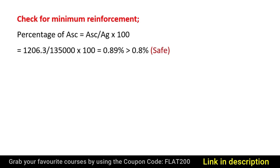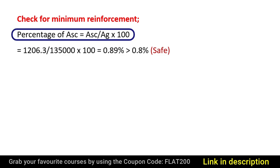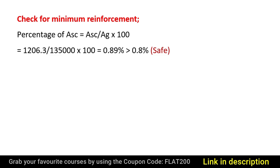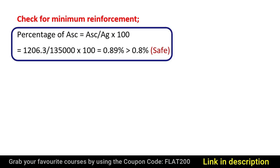Now let's check for the minimum reinforcement value. The percentage of steel equals area of steel divided by cross-sectional area of the column, multiplied by 100. With area of steel as 1206.3 mm² and cross-sectional area as 135,000 mm², the percentage of steel works out to 0.89%, which is greater than the minimum required percentage of 0.8% for a column, hence satisfying the criteria.